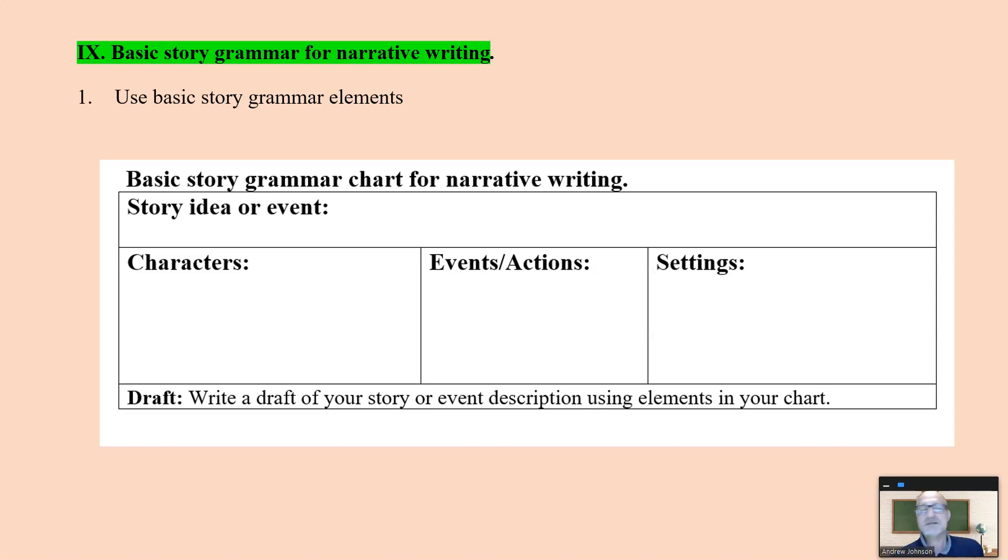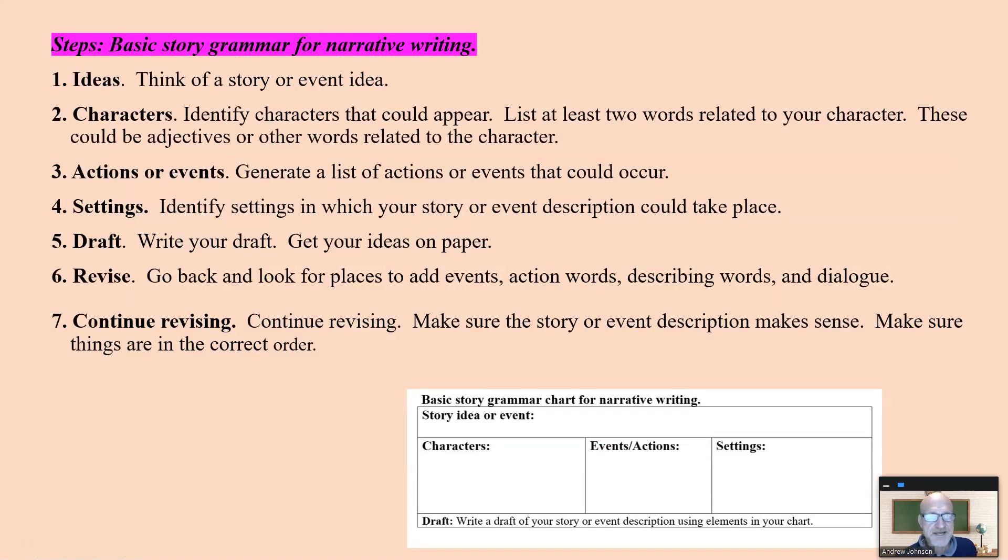Basic story grammar for narrative writing. The basic story grammar is, in every story there's characters, there's actions, events, and settings. And again, you start with your story idea, your characters, your events, and your settings, and use that to write the draft of your story. Adopt and adapt, write your draft, go back, look for places to add.